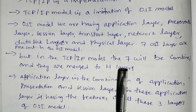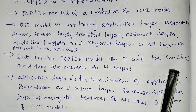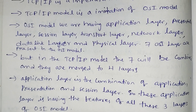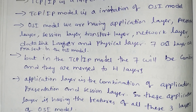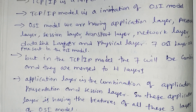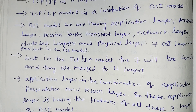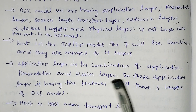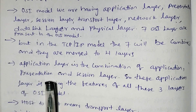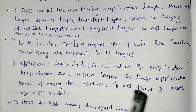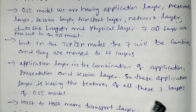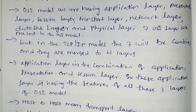In the TCP/IP model, the 7 OSI layers are combined and merged into 4 layers. The application layer is the combination of the application layer, presentation layer, and session layer.